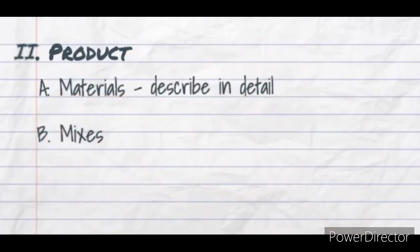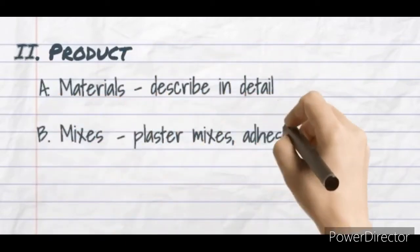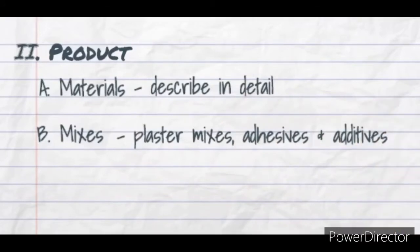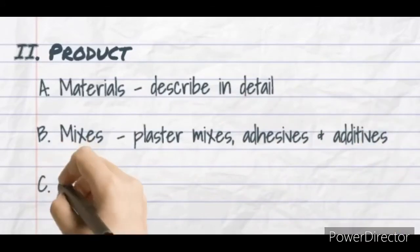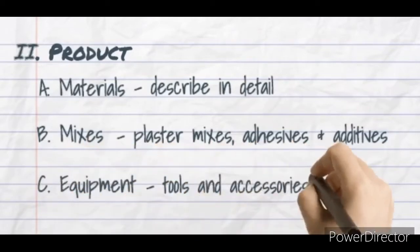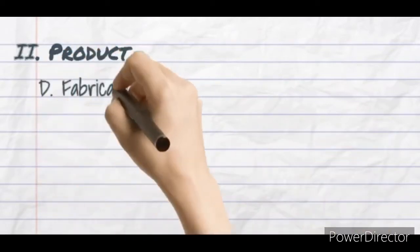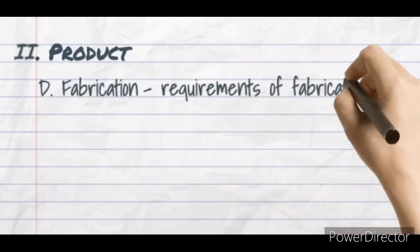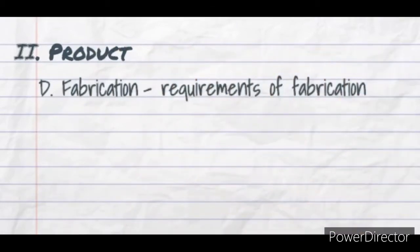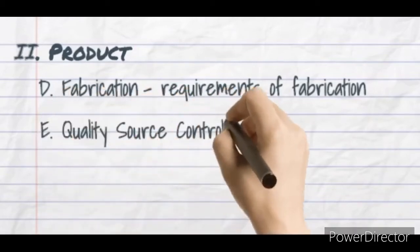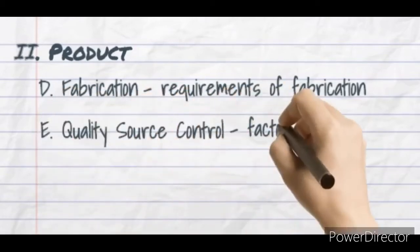The second subsection is mixes — if there are mixes such as plaster mixes, adhesives, and additives, this is where you indicate them. Third is equipment, where you include all the tools and accessories necessary. Fourth is fabrication, which covers requirements for doors, windows, partitions, and cabinets.